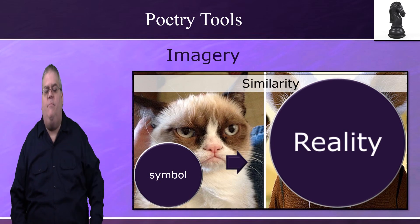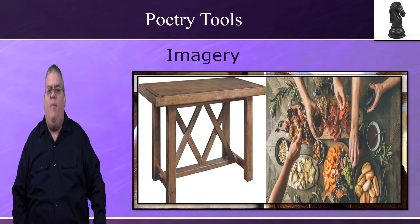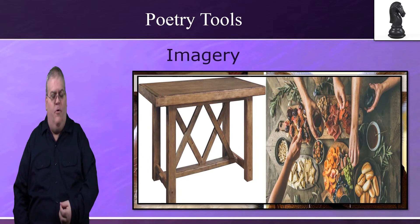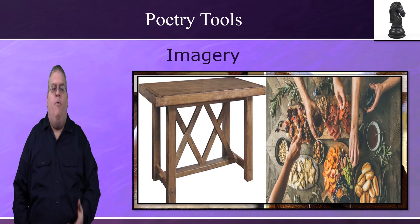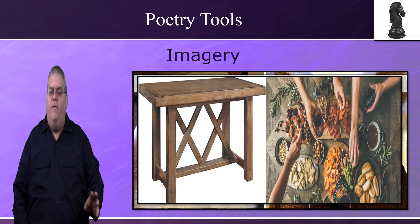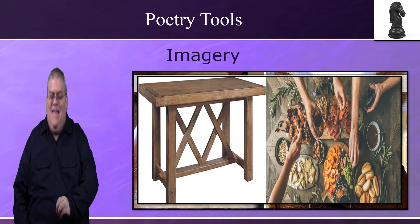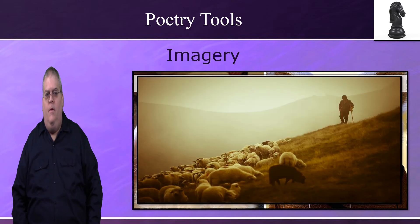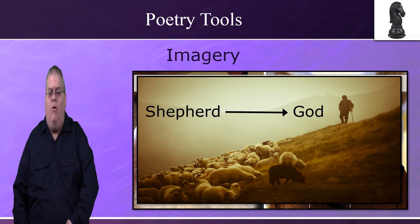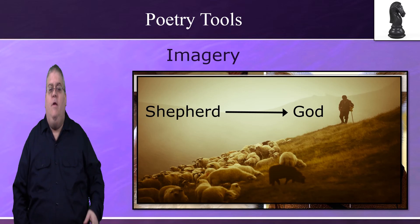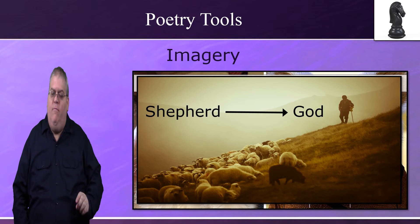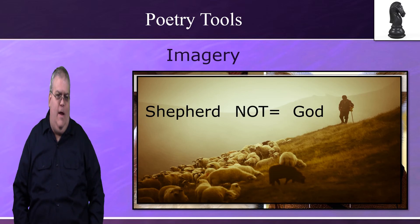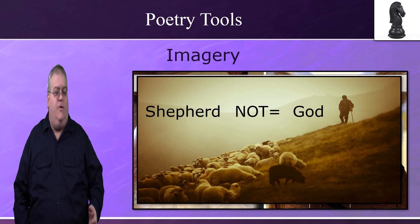In the same psalm, David says, 'You prepare a table for me in the presence of my enemies.' He's not just saying that God prepares a piece of furniture, but 'table' stands for the table and everything on it — a meal, provision, and fellowship in safety, even though the enemies are near. The characteristics of the symbol are related to the characteristics of what is symbolized. The characteristics of a typical shepherd tell us something about God and his relationship with David. However, the reality is symbolized but never equated. When David says God is like a shepherd, at the same time he is saying that in many ways God is not like a shepherd, and he expects the reader to figure out which is which.